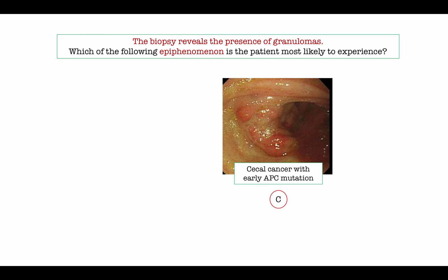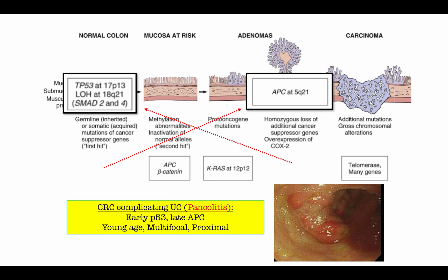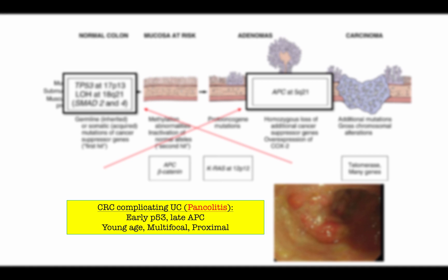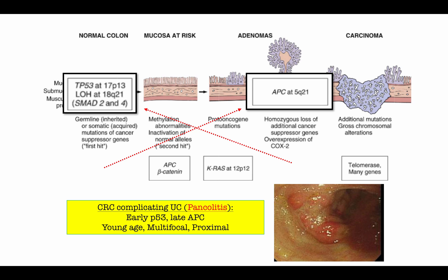Choice C is sporadic colorectal cancer — sporadic because of the early APC mutation, typical of the adenoma-carcinoma sequence. In colorectal cancer complicating inflammatory bowel disease, the classic change is the APC mutation flip-flopping with P53, so P53 would be identified as the early mutation in IBD-associated tumor. Colorectal cancer in IBD more typically complicates ulcerative colitis, especially long-standing pancolitis. Patients tend to be younger, tumors more proximal and multifocal. The early APC mutation was the clue this is a sporadically formed tumor.